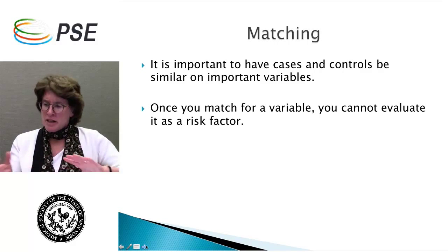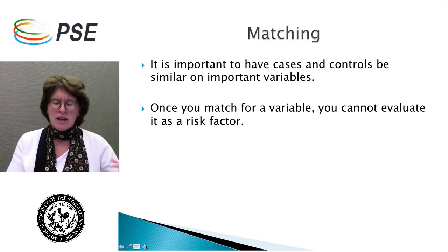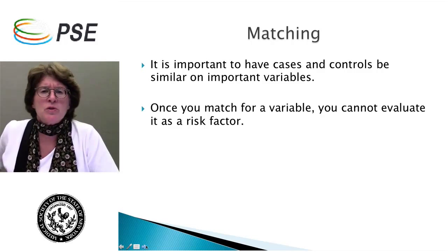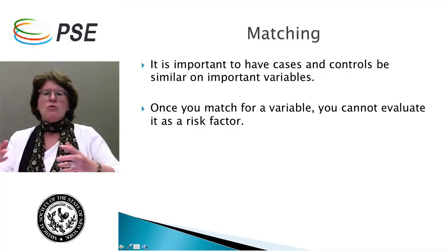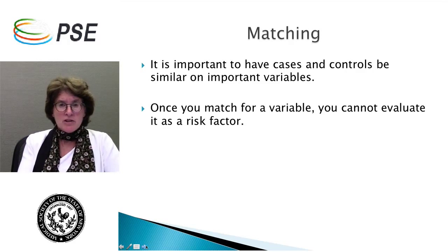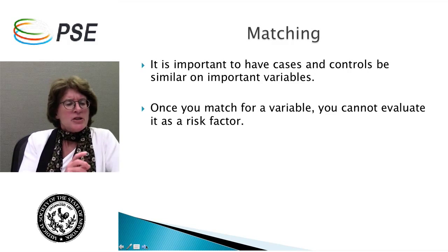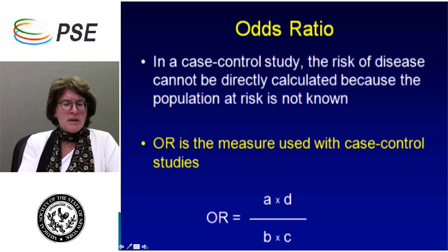You need cases and controls from the same population base. Controls could be hospital controls, family members, or neighbors, but basically they should have an equal opportunity of being exposed to the risk factor you are hypothesizing is causing the disease. We do this by something called matching — we usually match on age and sex so that the case is similar in age and sex to the control. You don't want to match on a slew of variables because then you won't be able to evaluate those as risk factors. The study is done retrospectively, so everything has happened in the past. Data could be based on hospital records, interviews, or survey information.